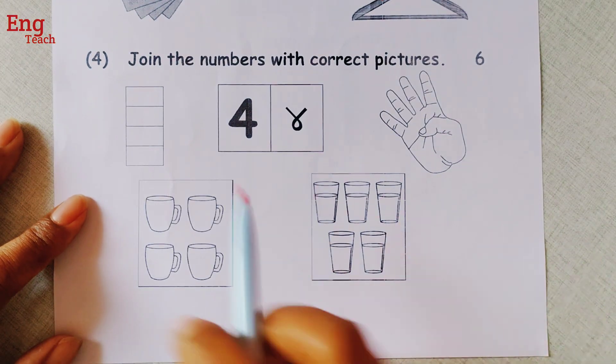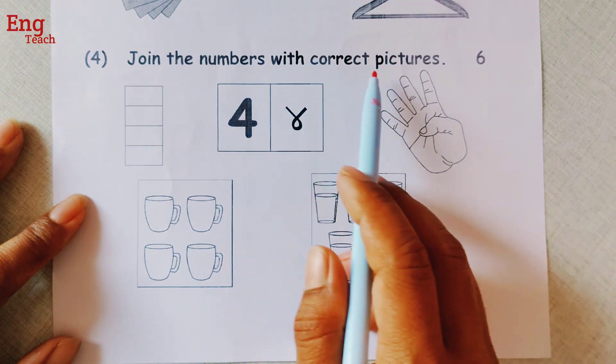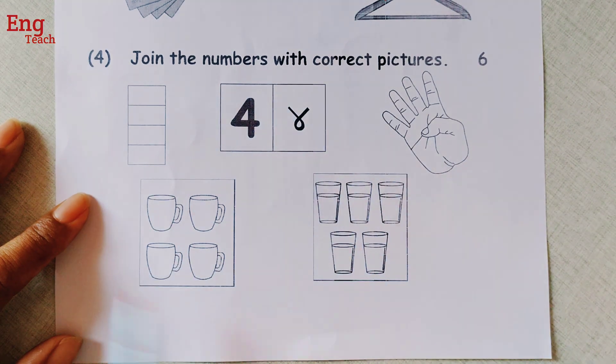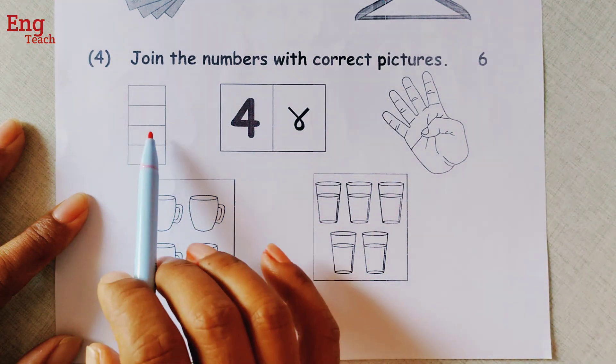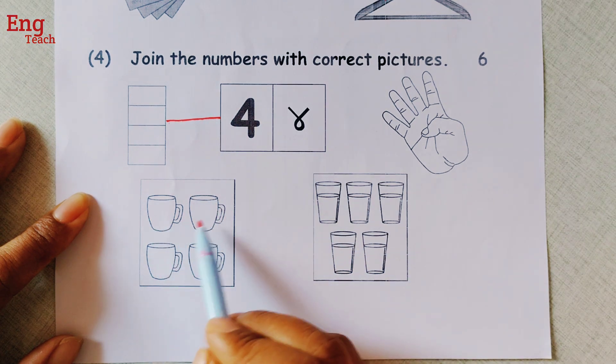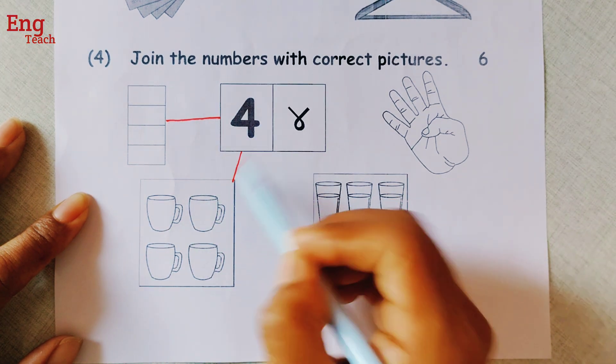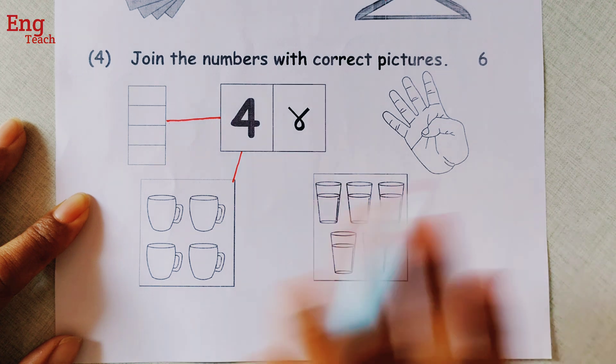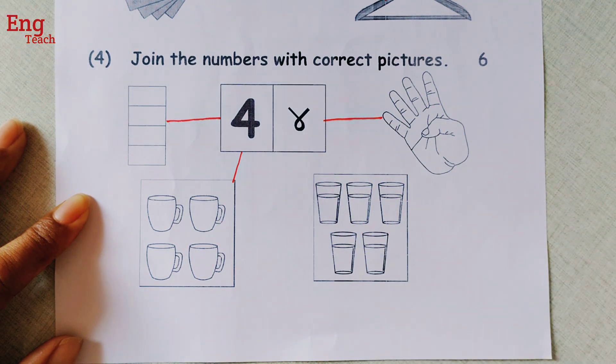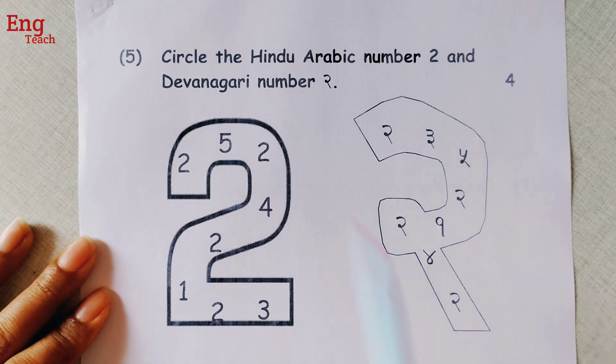And next number, join the numbers with correct picture. We have to join this number, number 4, with the correct picture. Here 1, 2, 3, 4. So we can join it. And here also 1, 2, 3, 4, we can join it. And here 1, 2, 3, 4, 5, we can't. And here 1, 2, 3, 4, so we can join it.